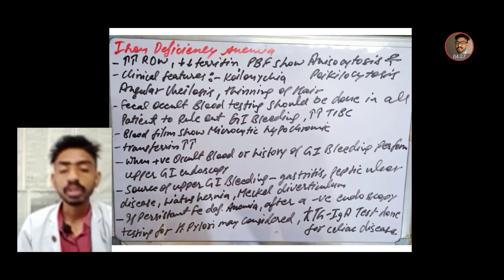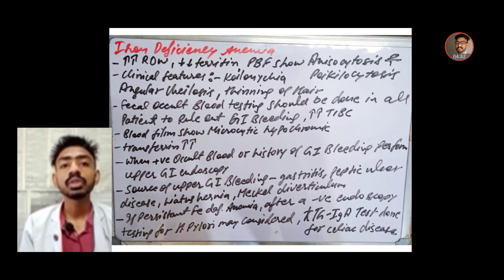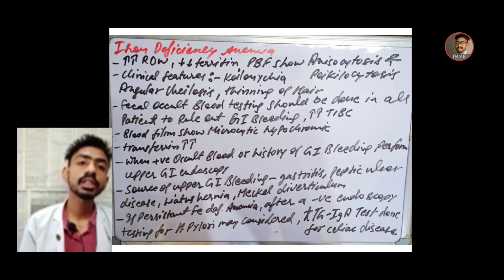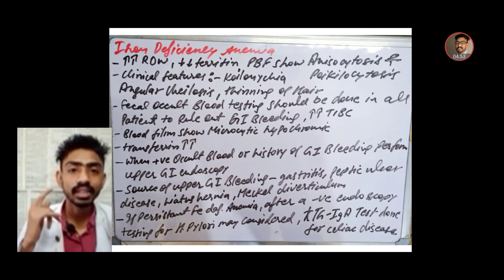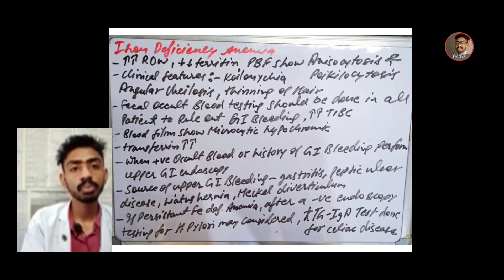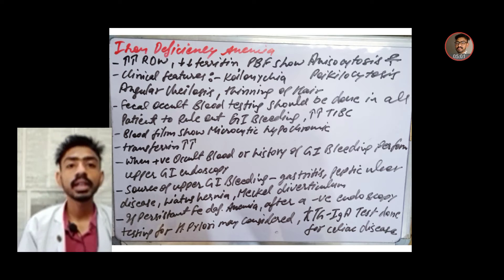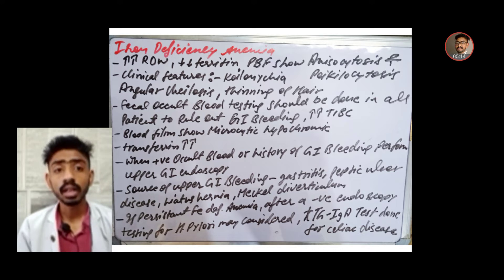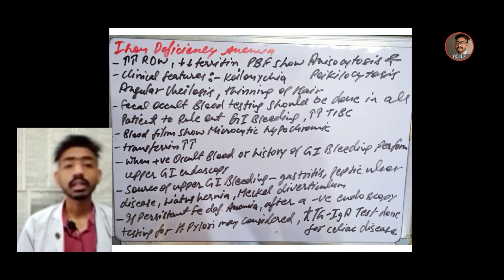In iron deficiency anemia there is a deficiency of iron, so RDW increases and serum ferritin decreases. The peripheral blood film shows anisocytosis and poikilocytosis. Clinical features include koilonychia, angular cheilitis, and thinning of hair. The blood film shows microcytic hypochromic red cells, and total iron binding capacity (TIBC) also increases.